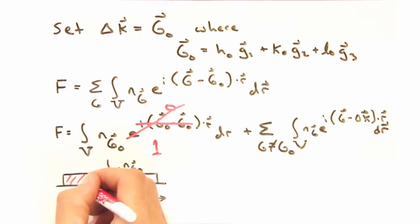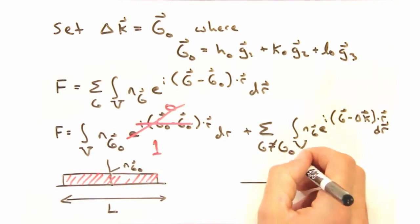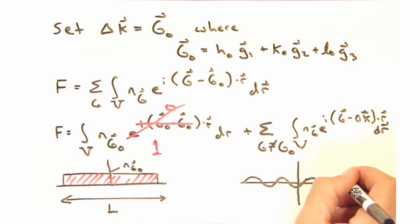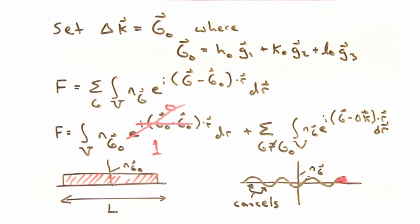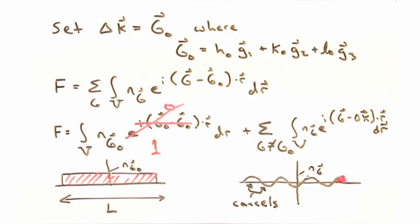What about the other terms, where G doesn't equal G-naught? Let's expand the complex exponential and sketch a quick graph of the contribution of the amplitude from each part for a one-dimensional example with length L. Hey, that's weird. Most of the complex exponential wave cancels out, but there's a little tiny bit at the end which doesn't.